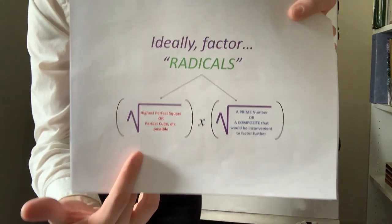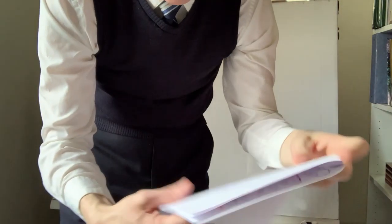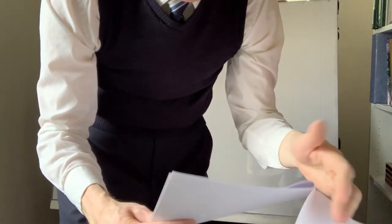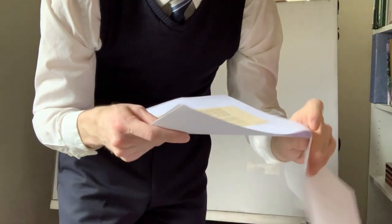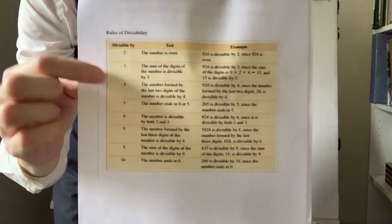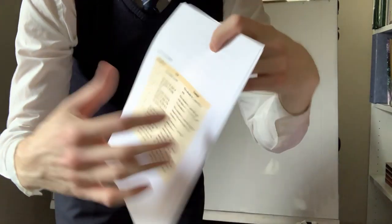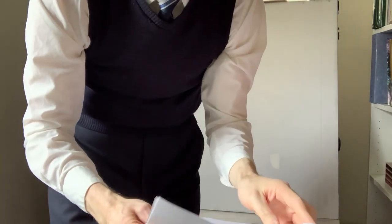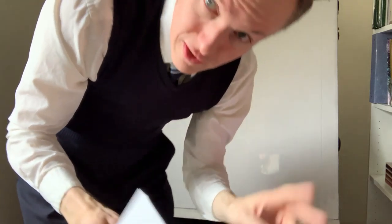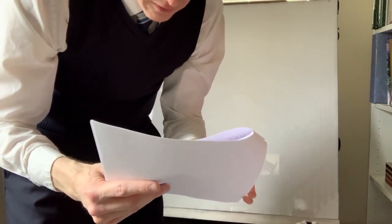This is a strategy for factoring radicals — we'll get to this. This is just an overview of rules of divisibility if you're a little bit rusty — that is, what you can divide by nicely, getting a whole number as a quotient.